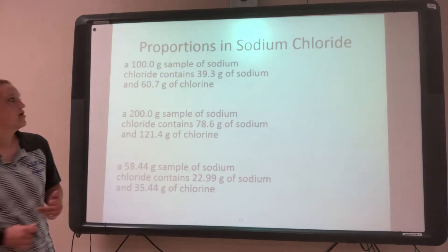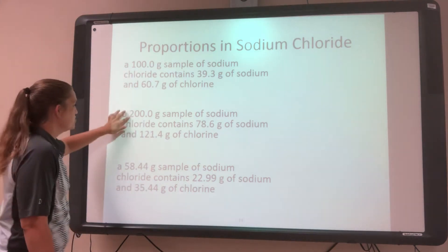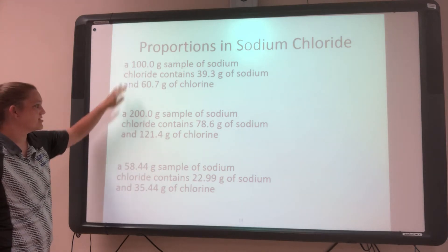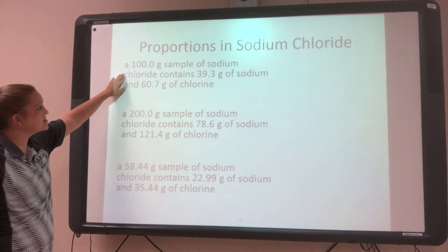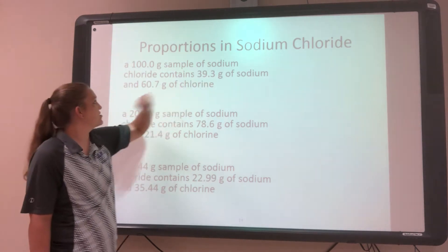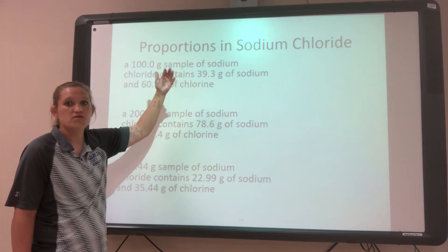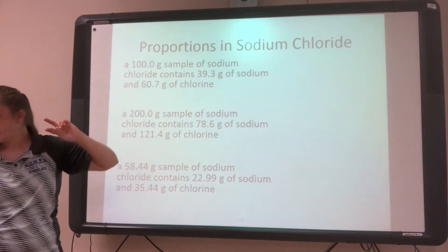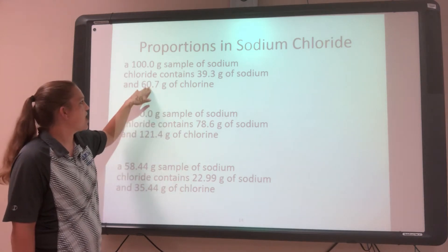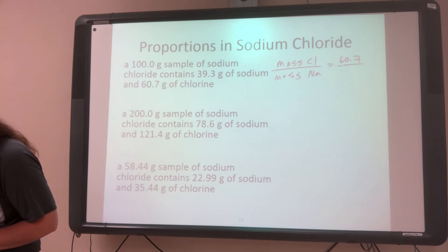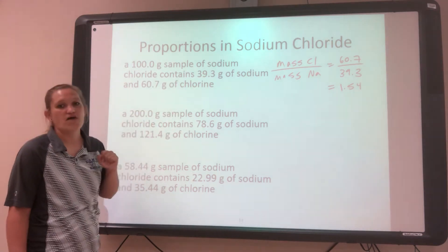This slide is going to show you that. I have different samples: a 100-gram sample, a 200-gram sample, and a 58.44-gram sample. In my 100-gram sample of sodium chloride — which is just salt — I've got a certain mass of sodium and a certain mass of chlorine. Let's find the ratio of chlorine to sodium. Chlorine divided by sodium: 60.7 divided by 39.3 gives a ratio of 1.54.